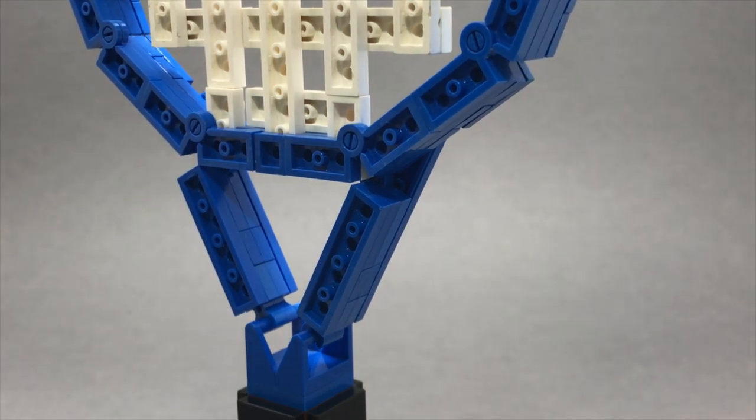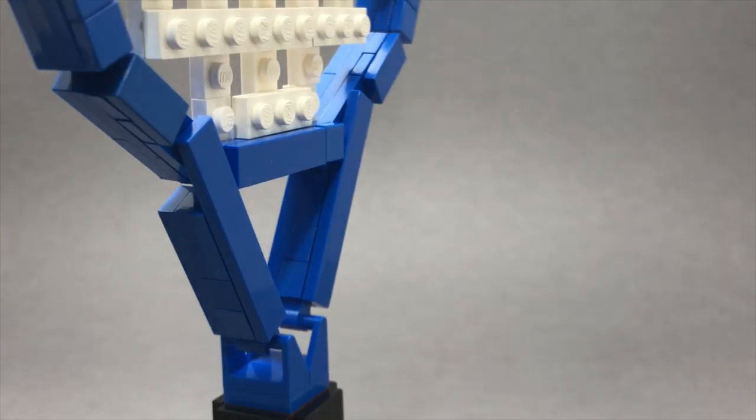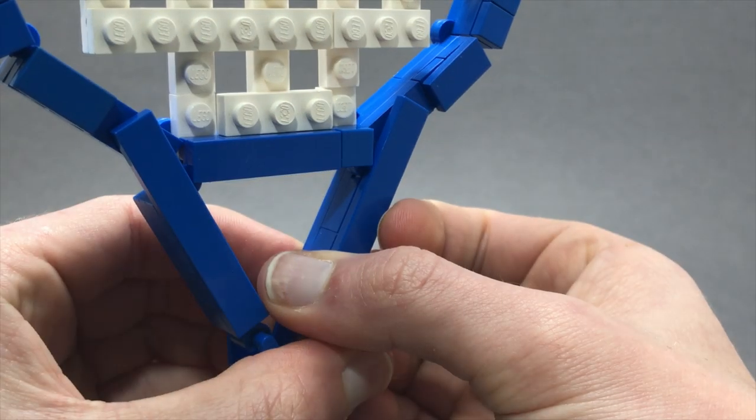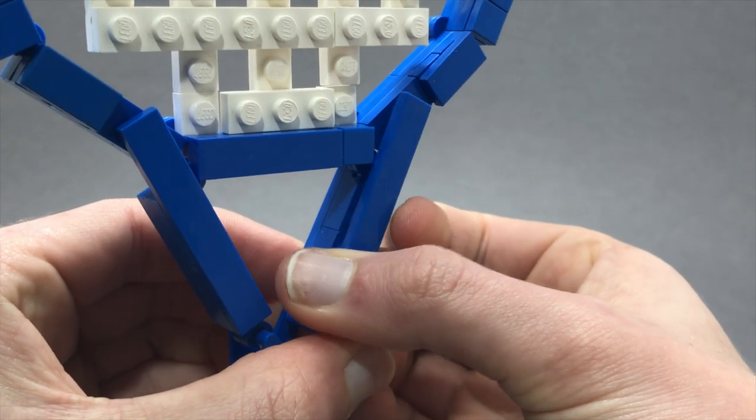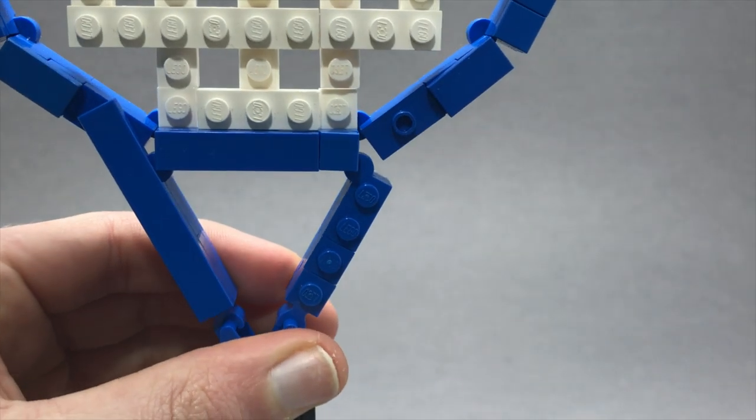Those hinged parts are used all over the place to achieve these different angles. You can also see how the angles lined up with the jumper plates over here as well.